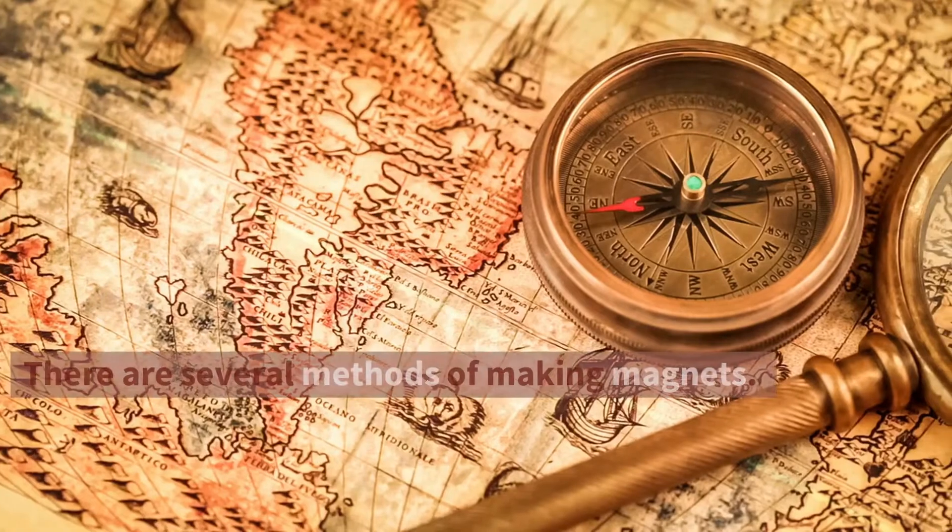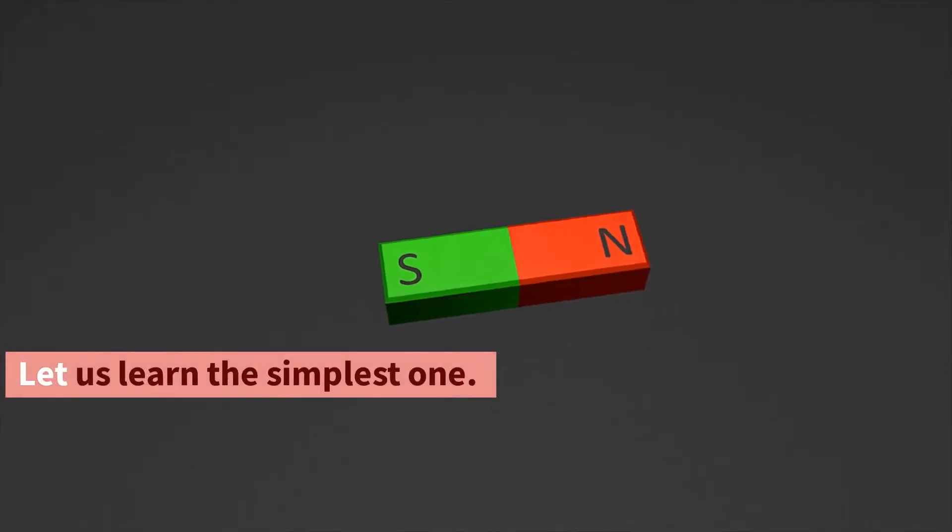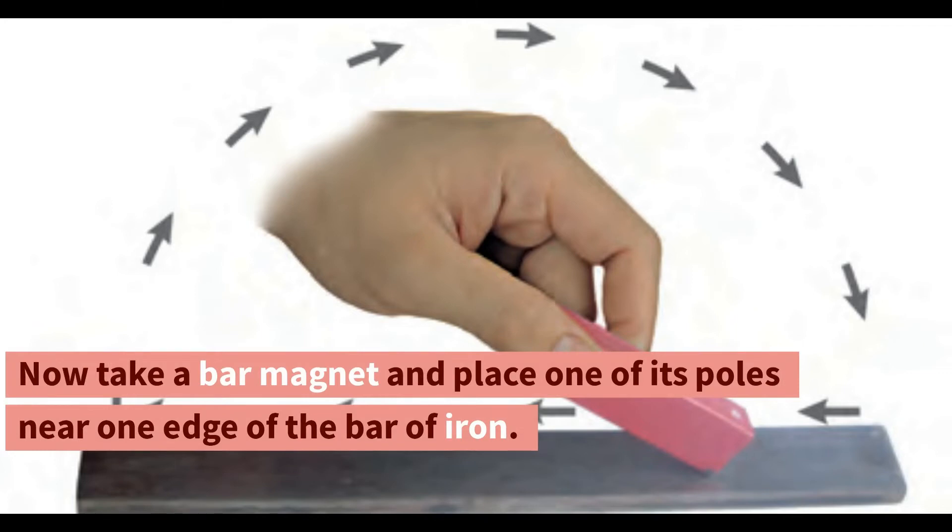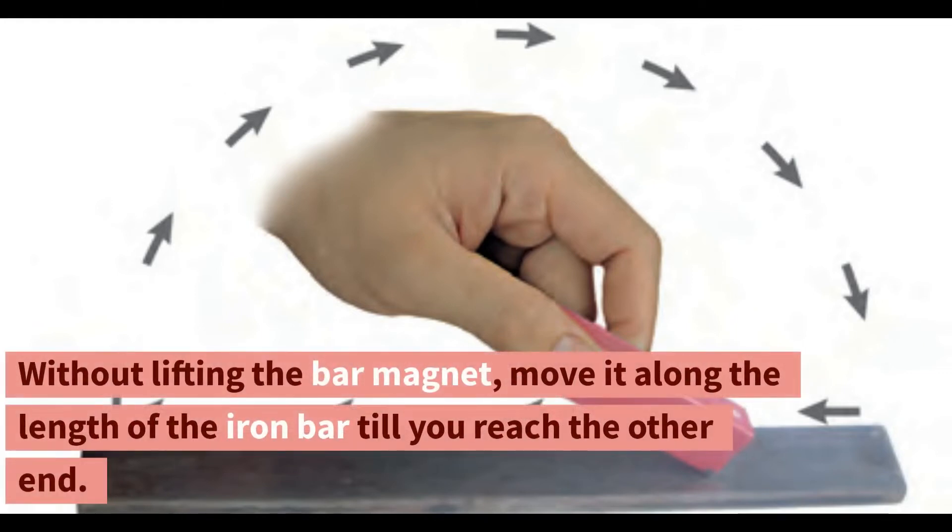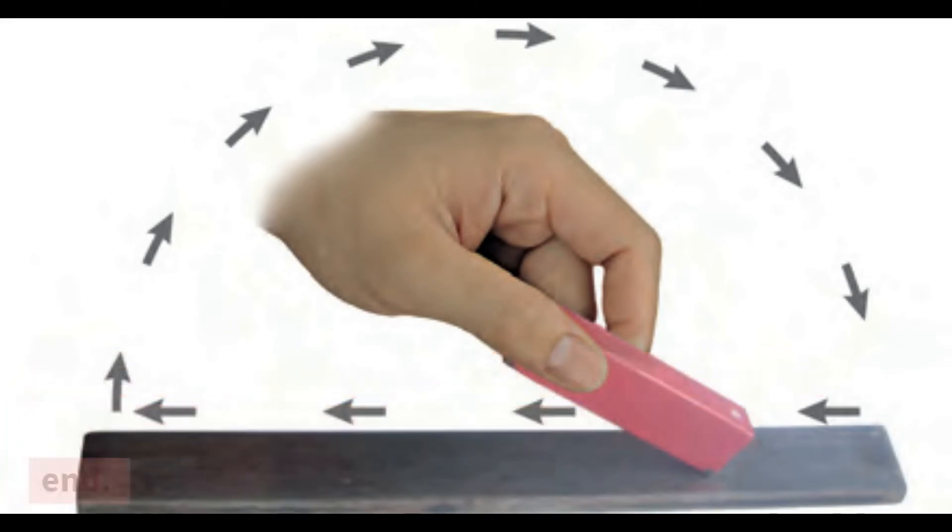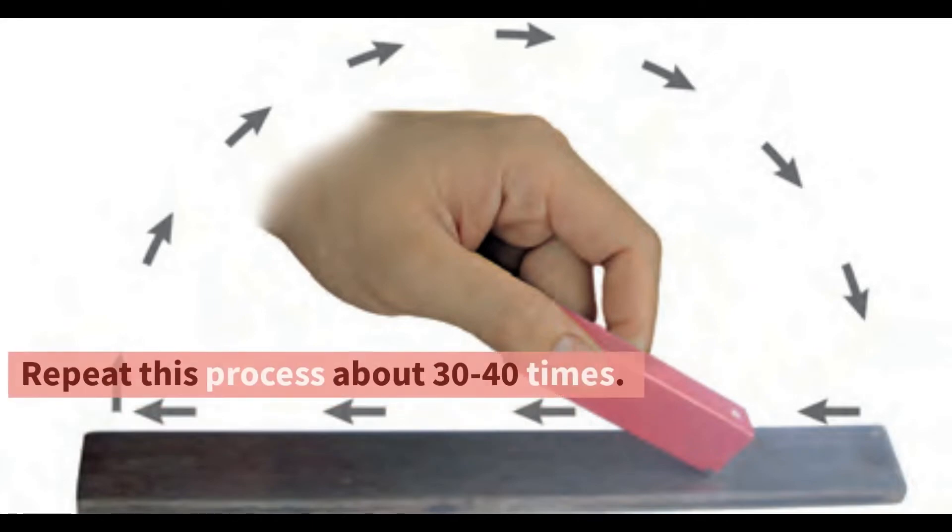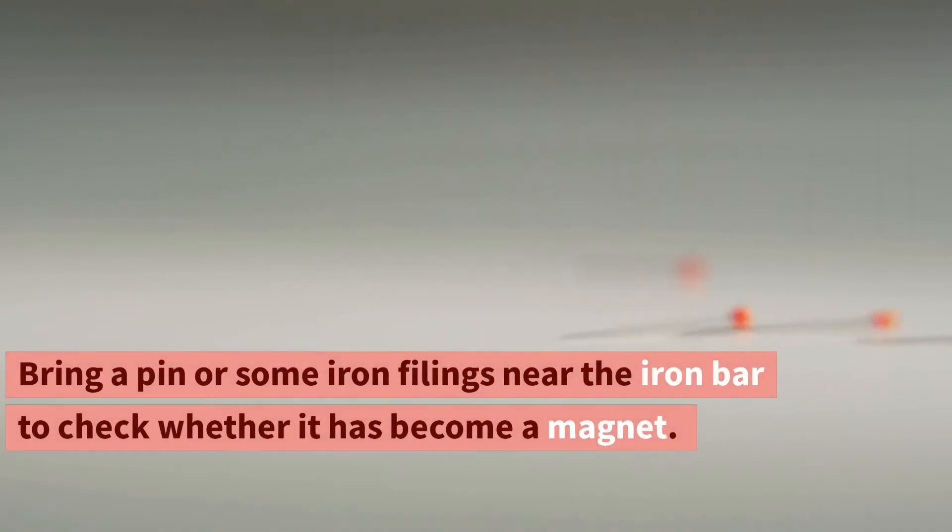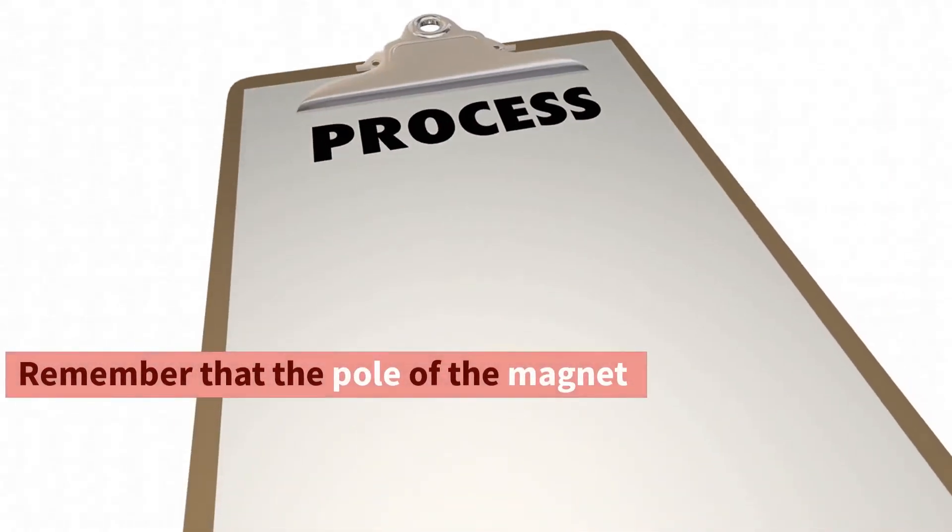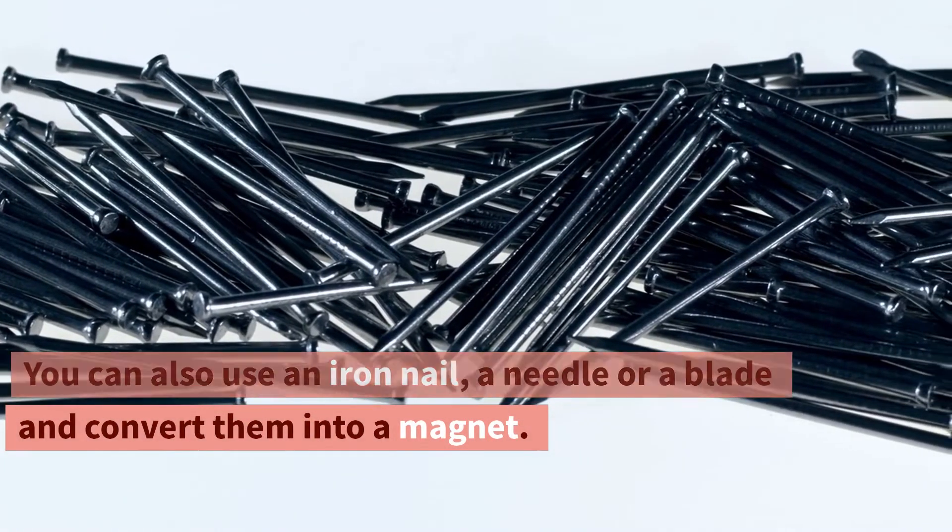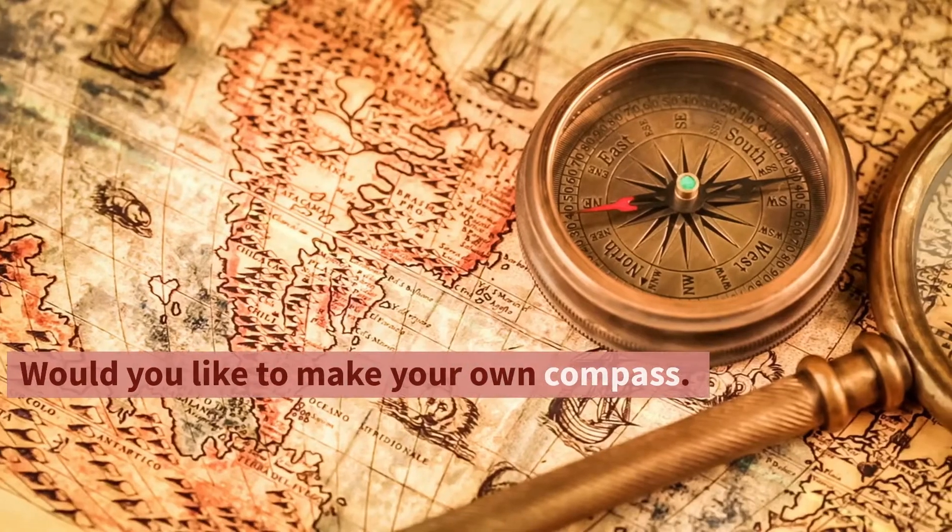Make your own magnet. There are several methods of making magnets. Let us learn the simplest one. Take a rectangular piece of iron. Place it on the table. Now take a bar magnet and place one of its poles near one edge of the bar of iron. Without lifting the bar magnet, move it along the length of the iron bar till you reach the other end. Now lift the magnet and bring the pole, the same pole you started with, to the same point of the iron bar from which you began. Move the magnet again along the iron bar in the same direction as you did before. Repeat this process about 30 to 40 times. Bring a pin or some iron filings near the iron bar to check whether it has become a magnet. If not, continue the process for some more time. Remember that the pole of the magnet and the direction of its movement should not change. You can also use an iron nail, a needle or a blade and convert them into a magnet. You now know how to make a magnet.